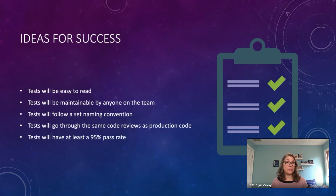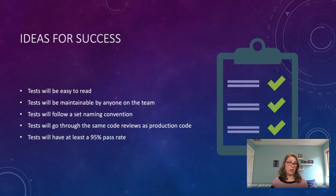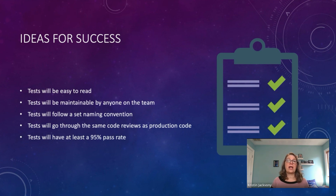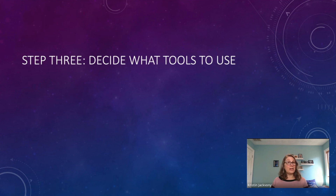Here are some ideas for success: tests will be easy to read, tests will be maintainable by anyone on the team, tests will follow a set naming convention, and tests will go through the same code reviews as production code. Those four items will ensure the team can work on the project together. You might also set a pass rate target — like tests will have at least a 95% pass rate, though for mobile that might be a little ambitious. Once you've determined success criteria, it's time to think about what tools to use.